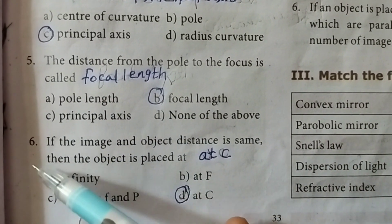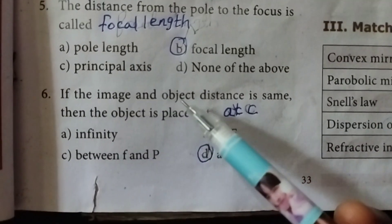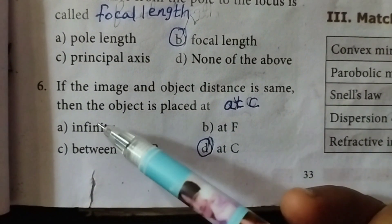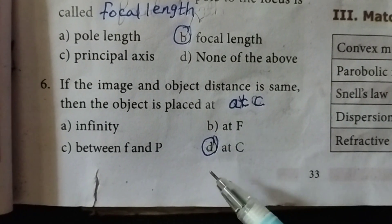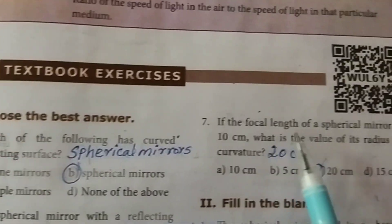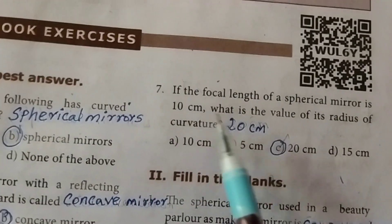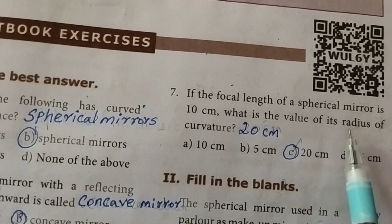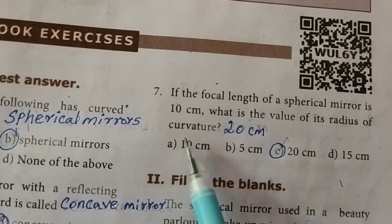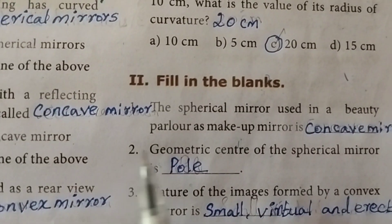Fifth one: the distance from the pole to the focus is called focal length, answer is B. Sixth one: if the image and object distance are the same, the object is placed at C, answer is D. Seventh one: if the focal length of the spherical mirror is 10 centimeters, the value of its radius of curvature is 20 centimeters, answer is C.